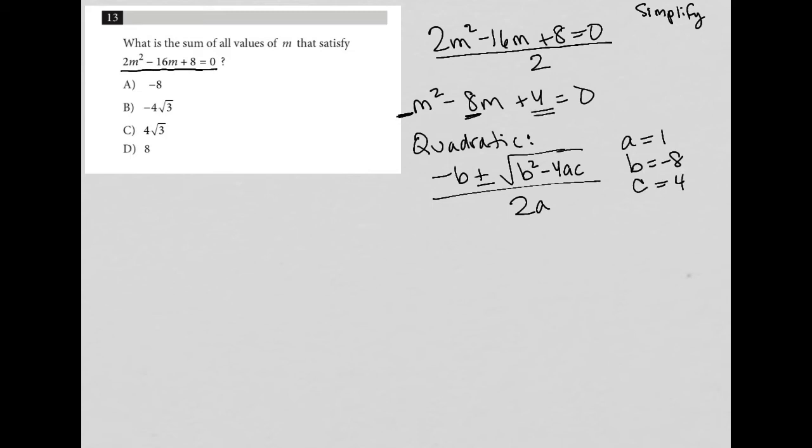So I'd end up with negative b would be positive 8 since b is already negative 8. So I have 8 plus or minus the square root b squared. Negative 8 times negative 8 is 64 minus 4 times a, which is 1, times c, which is 4. All over 2a, which is just 2.